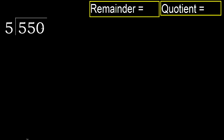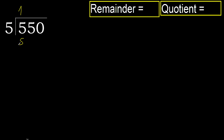550 divided by 5. 5 is not less. 5 multiplied by which number is nearest but not greater? 5 multiplied by 2 is 10 — it's greater. Multiply by 1 is 5 — it's not greater.